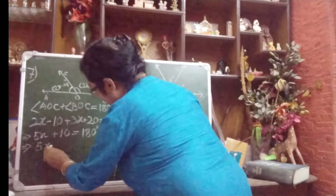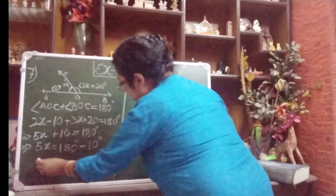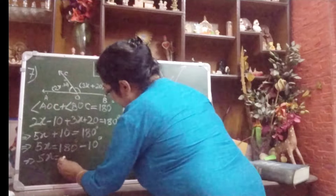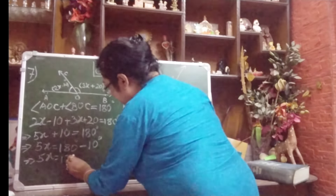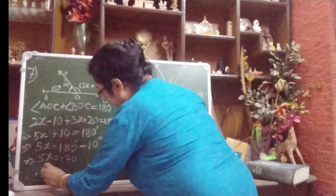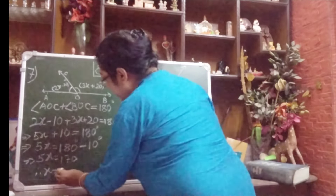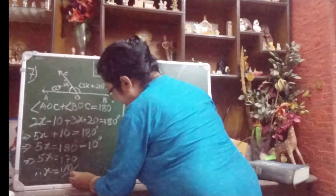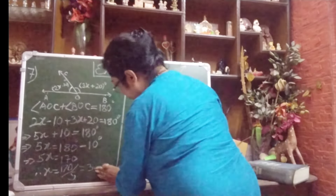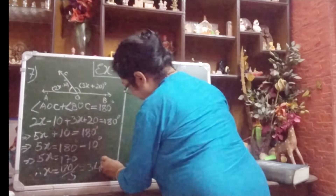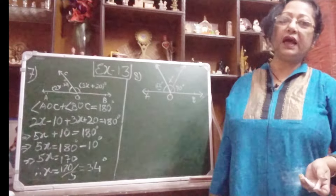So 5x equals 180 degrees minus 10 degrees. 180 minus 10 equals 170 degrees. Therefore, x equals 170 divided by 5. 170 divided by 5 gives us 34. So the value of x is 34 degrees.